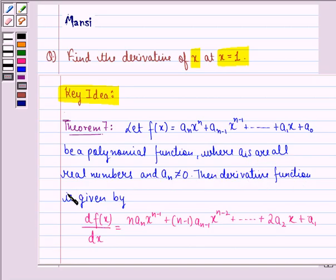Then derivative function is given by df(x)/dx equals n times a_n x^(n-1) plus (n-1) times a_(n-1) x^(n-2) and so on till 2 times a_2 x plus a_1. So if we clearly see what we have done here to find df(x)/dx, we have taken the derivatives of respective terms and simply added them.